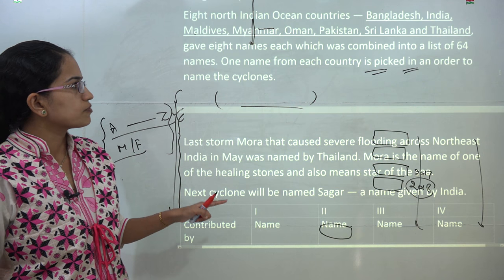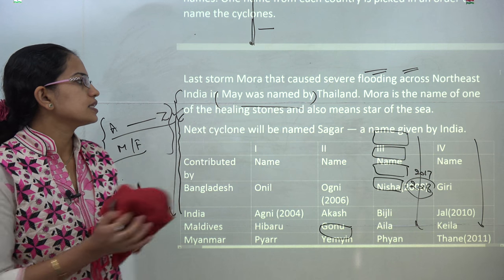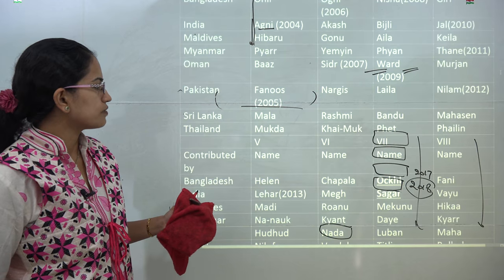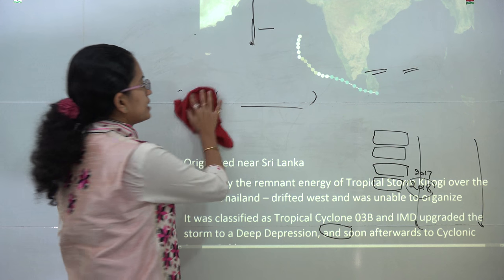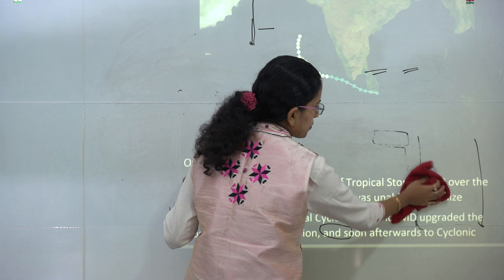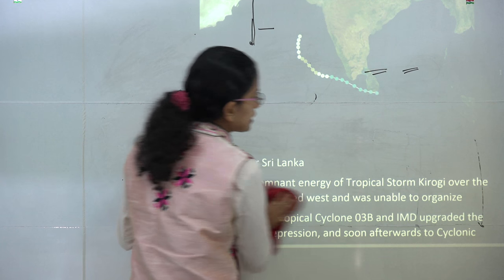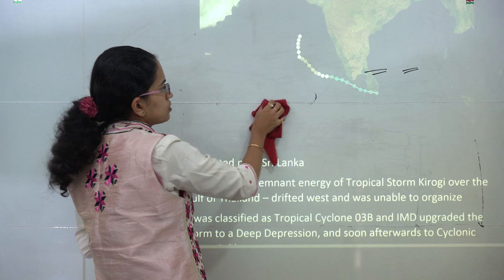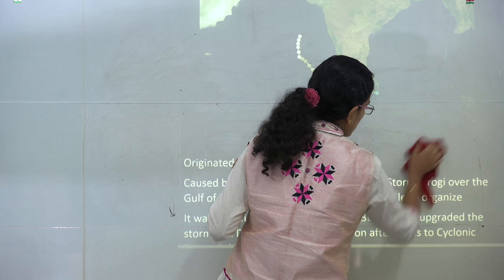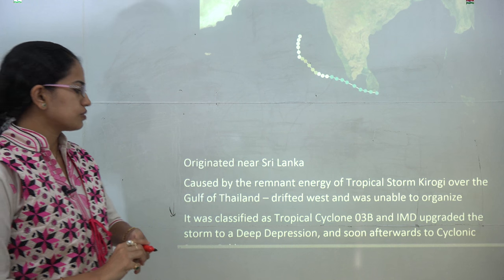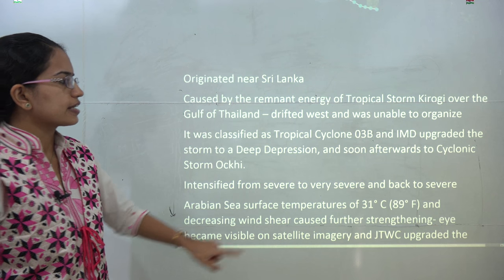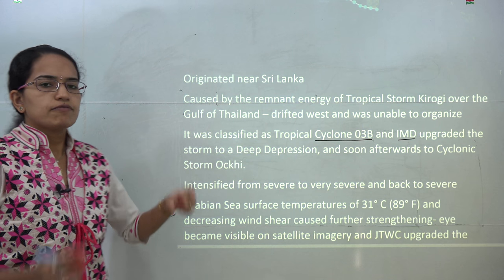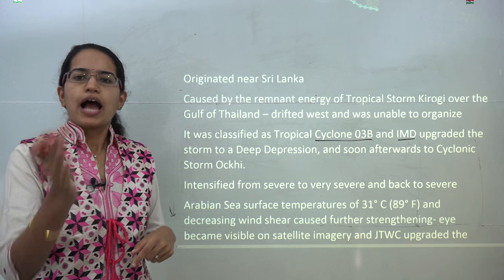Mora, the Thailand name, means 'healing stones' or 'star of the sea,' and the next cyclone Sagar is an Indian name. Okhi was a modification of tropical cyclone Kiroki that worked over Thailand and drifted westward but was unable to organize itself. It developed near the Sri Lankan coast; however, proximity to land prevented it from gaining full strength. It was initially classified as tropical cyclone 03B, then IMD upgraded it to deep depression and later to cyclonic storm Okhi, which was further upgraded to very severe and then back to severe.